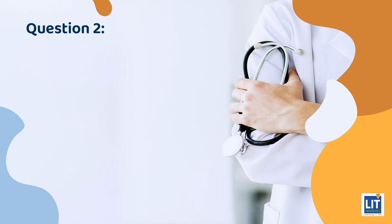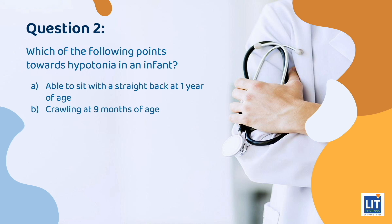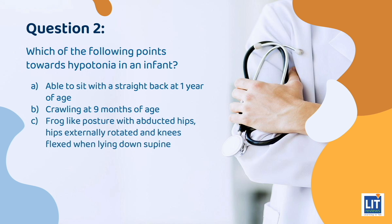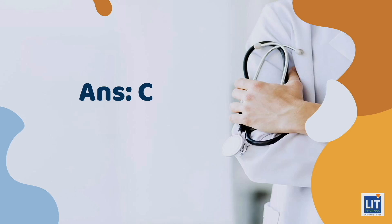Question 2: Which of the following points towards hypotonia in an infant? A. Ability to sit with a straight back at 1 year of age. B. Crawling at 9 months of age. C. Frog-like posture with abducted hips, externally rotated hips, and knees flexed when lying supine. D. Head lag in a 1 month old infant. Or E. Push up on both arms in prone position at 5 months. The answer is C.